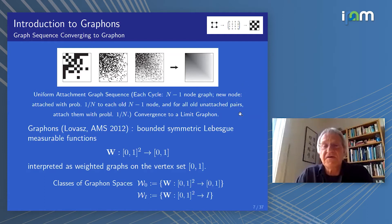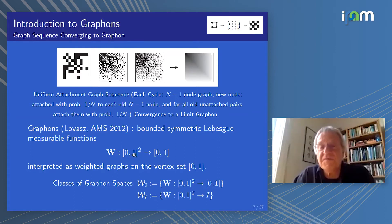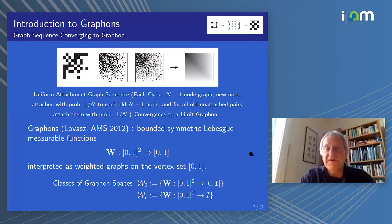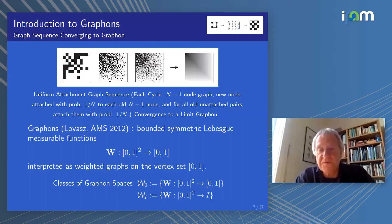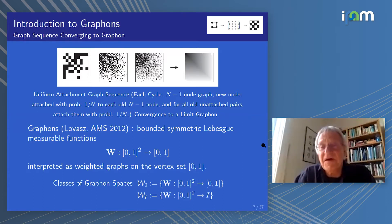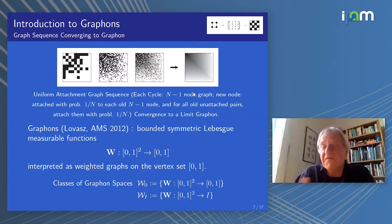What exactly is a graphon? It's simply a bounded symmetric Lebesgue measurable function from the unit square to the unit interval, in the case of positive weightings only. We interpret such a function to be the infinite weighted graph — the infinite weighted adjacency matrix for the limit of an infinite graph.